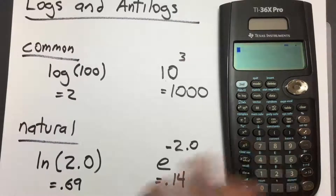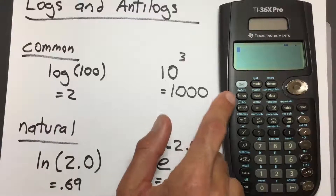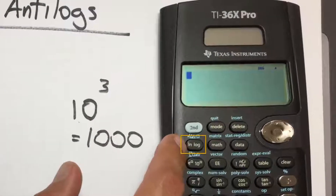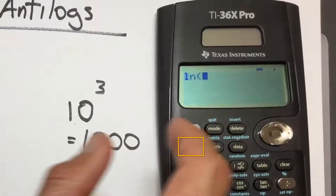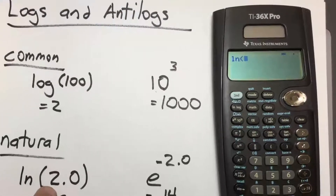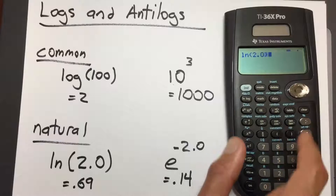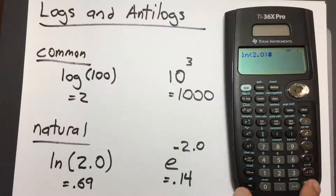Clear the screen. To take the natural log, press the logarithm key one time, placing LN on the screen. Enter the number 2.0, close the parentheses, and press enter. This gives us 0.69, as we were expecting.